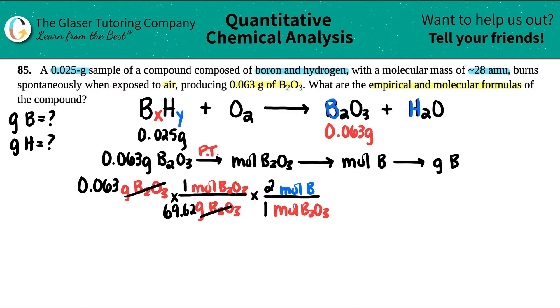Now that cancels out. One more step for this part. Mole B on the bottom, gram of B up top. Grams to mole relationship again of the same element - that's the periodic table. One mole is whatever the mass is on the periodic table. So that's 10.81. Cancel the moles of B. And now let's get this answer. 0.063 divided by 69.62 times 2 times 10.81. So now I know that I produced 0.01956 grams of boron.